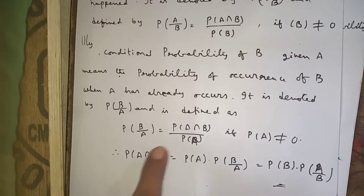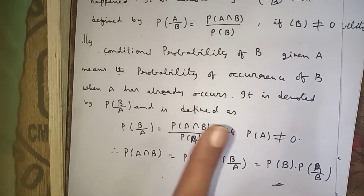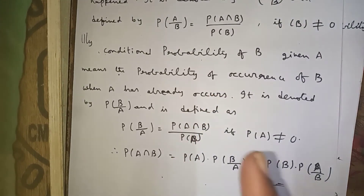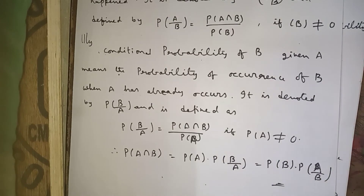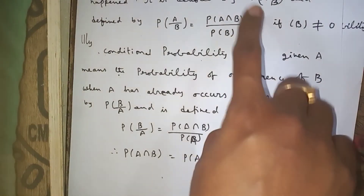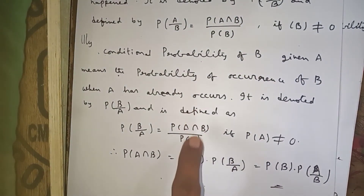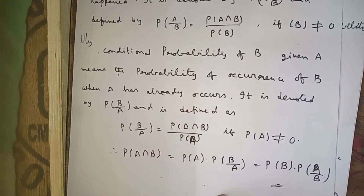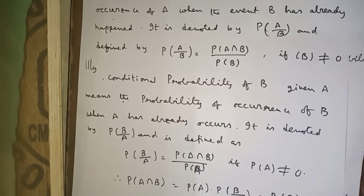If you cross multiply, P(A ∩ B) = P(B | A) · P(A). To summarize: P(A | B) = P(A ∩ B) / P(B), and P(B | A) = P(A ∩ B) / P(A). Cross multiplying gives P(A ∩ B) = P(A) · P(B | A) = P(B) · P(A | B). This is about conditional probability.